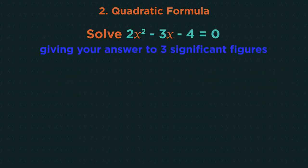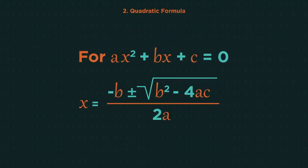If the question says giving your answer to three significant figures, or giving your answer to two decimal places, it means these quadratics cannot be factorised. So straight away look to use the quadratic formula. Let's have a look at how to use the quadratic formula to solve quadratics.